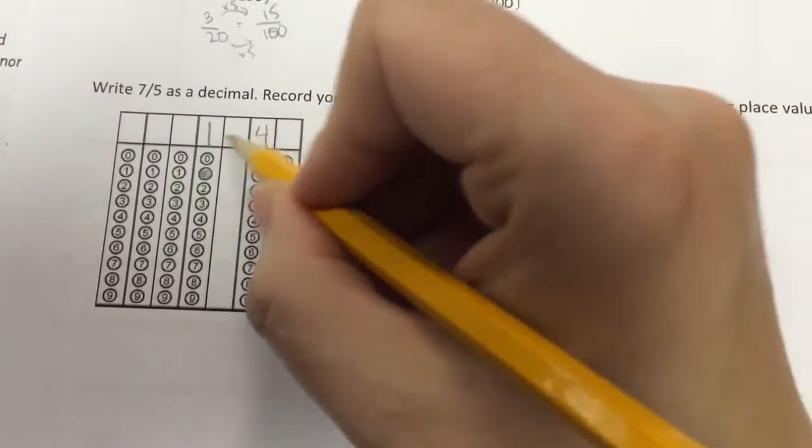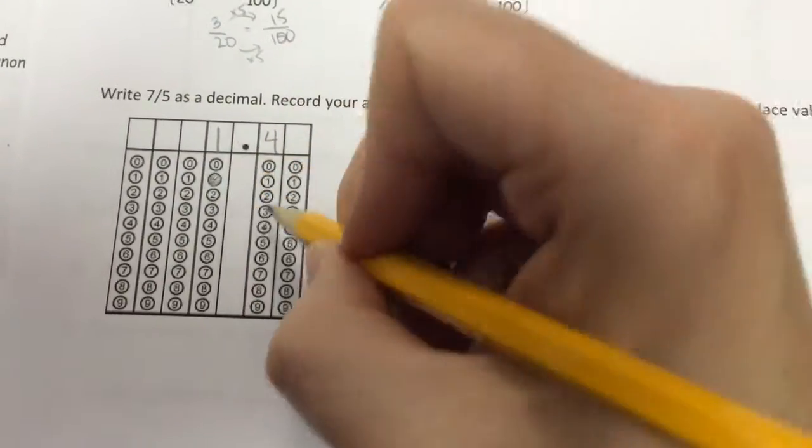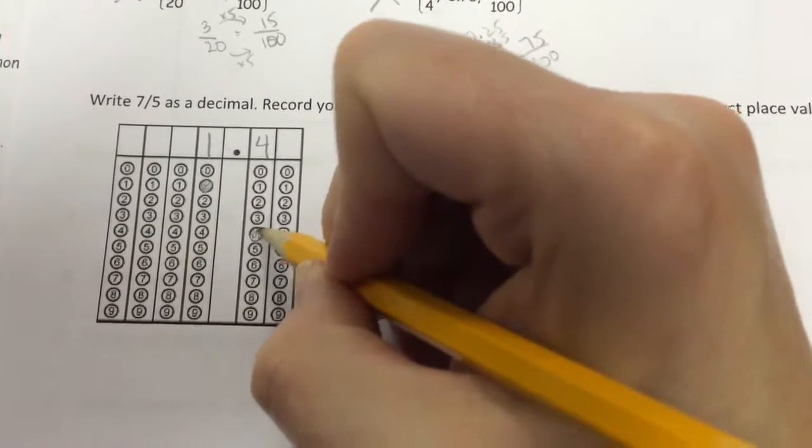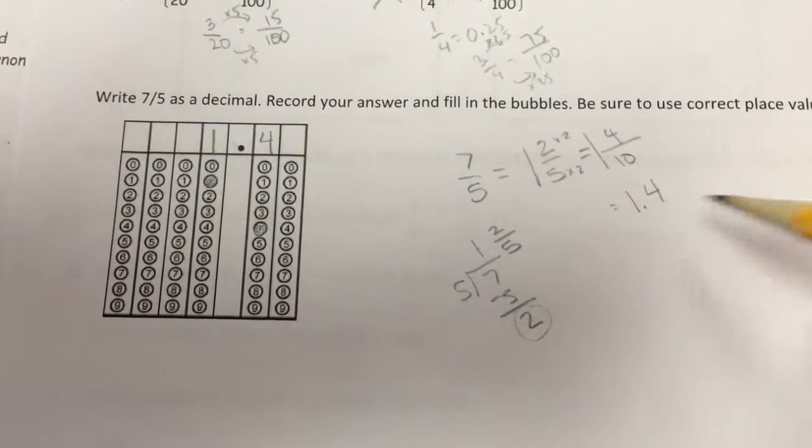because the computers don't read this. They read what I bubble. One point four. Okay. One and four-tenths.